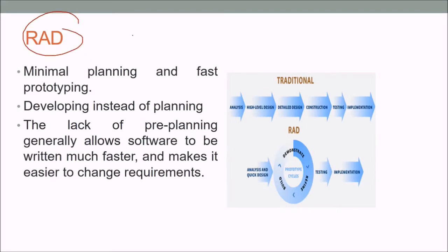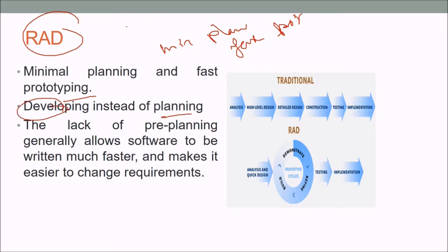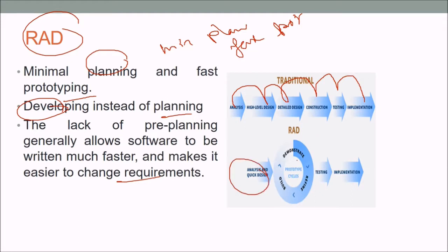RAD — Rapid Application Development — means fast application development with minimal planning and fast prototyping. Minimum pre-planning allows software to be written much faster and makes it easier to change requirements. In RAD, instead of traditional analysis, high-level design, detail design, construction, and testing, we do: analyze and design, demonstrate, then refine and build, then demonstrate and refine and build again, and finally test and implement.